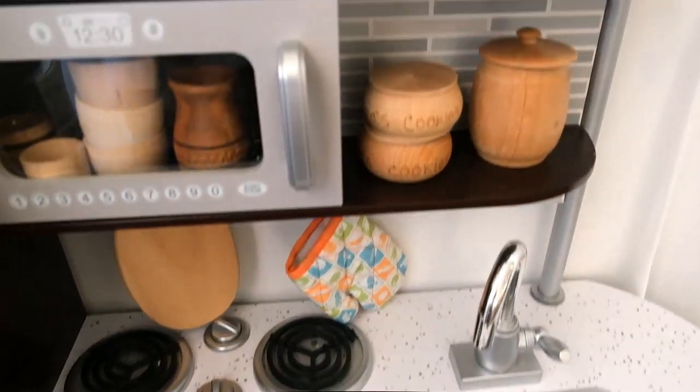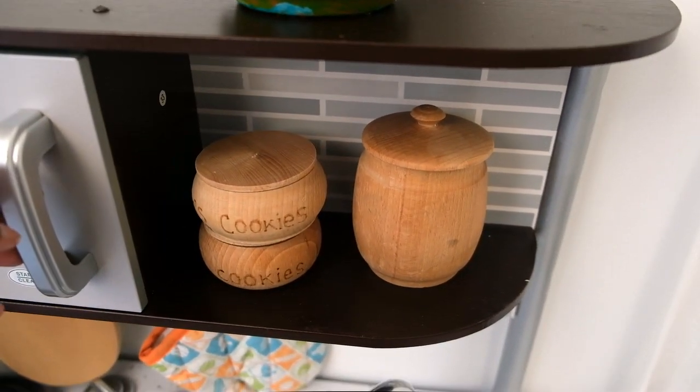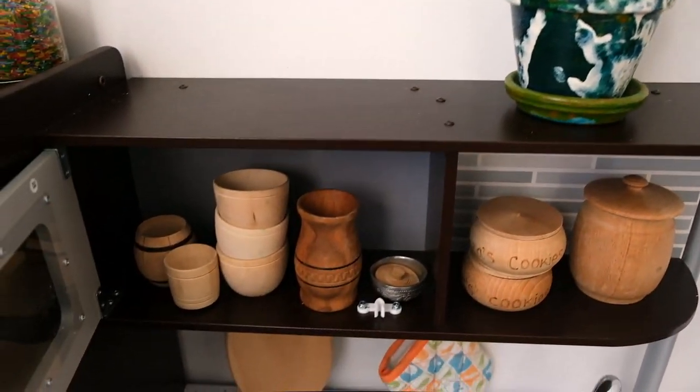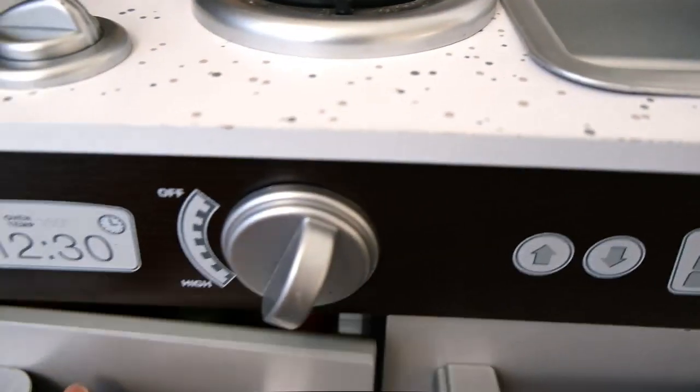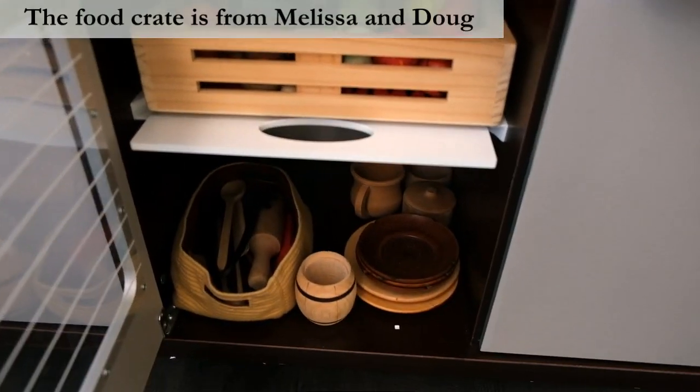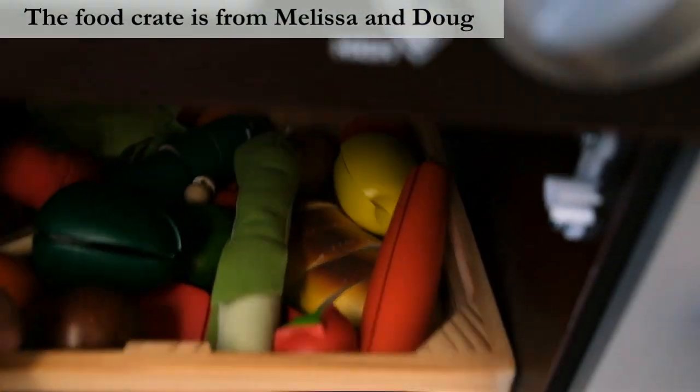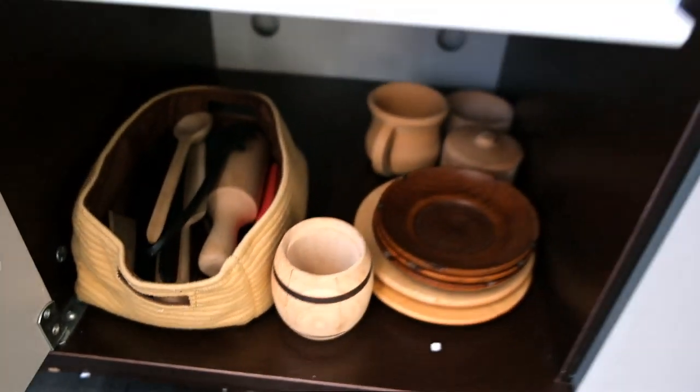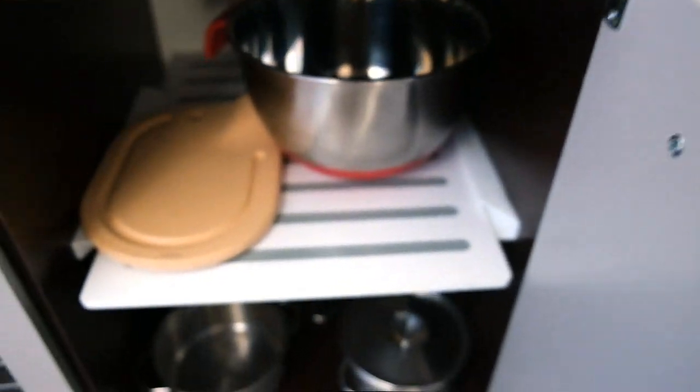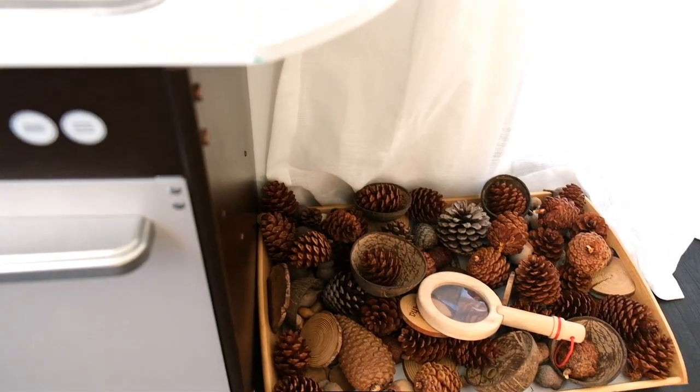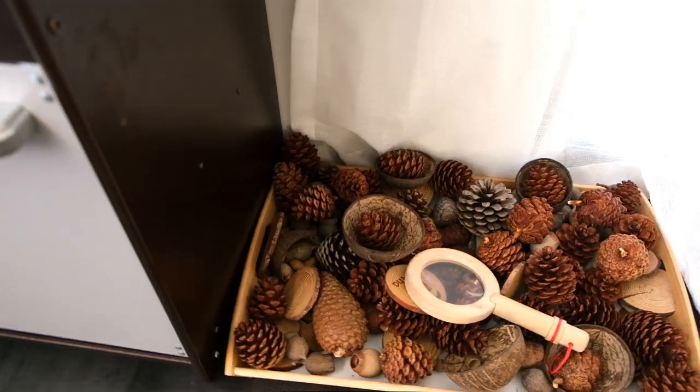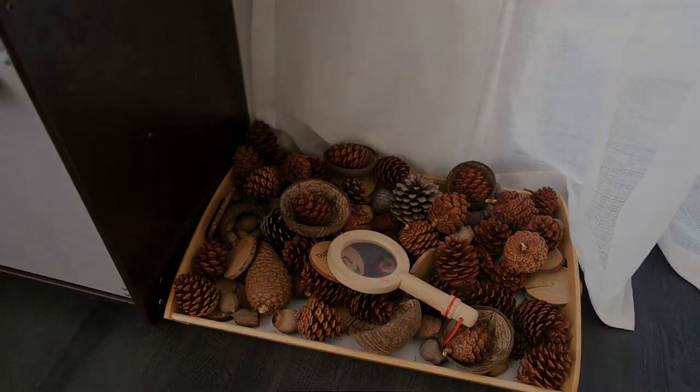All the wooden utensils and cups are things I bought from Etsy. And here is our nature basket. I always keep a magnifying glass there because they love exploring things they find.